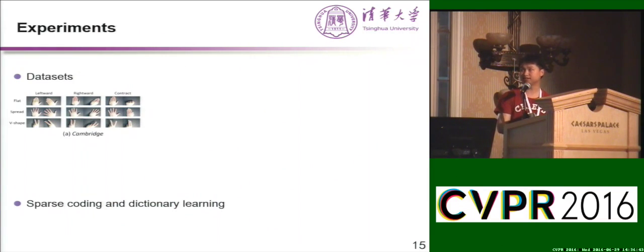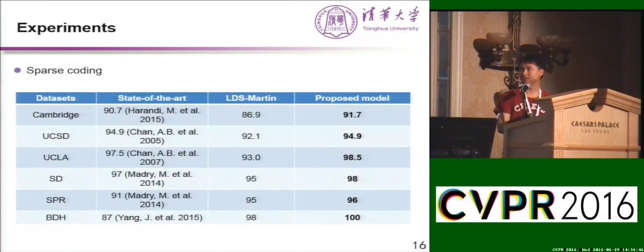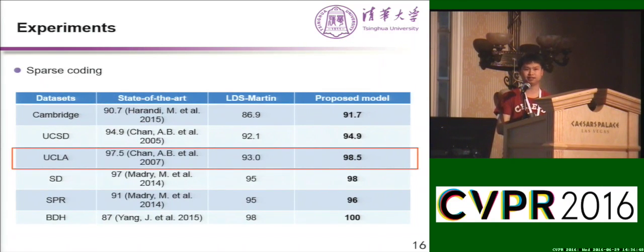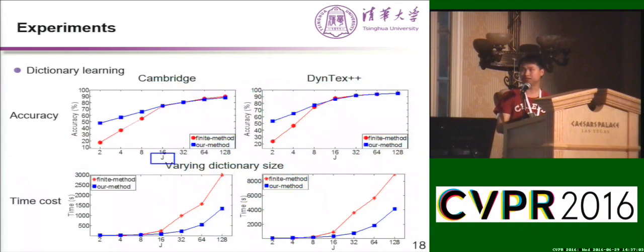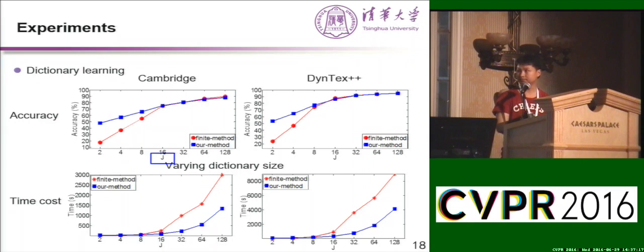We performed experiments on six datasets. For sparse coding, the proposed model improves performance over the state of the art. We also visualize the dictionary patterns and find some interesting structures. Comparing dictionary learning methods, we obtain better accuracy with less time cost.